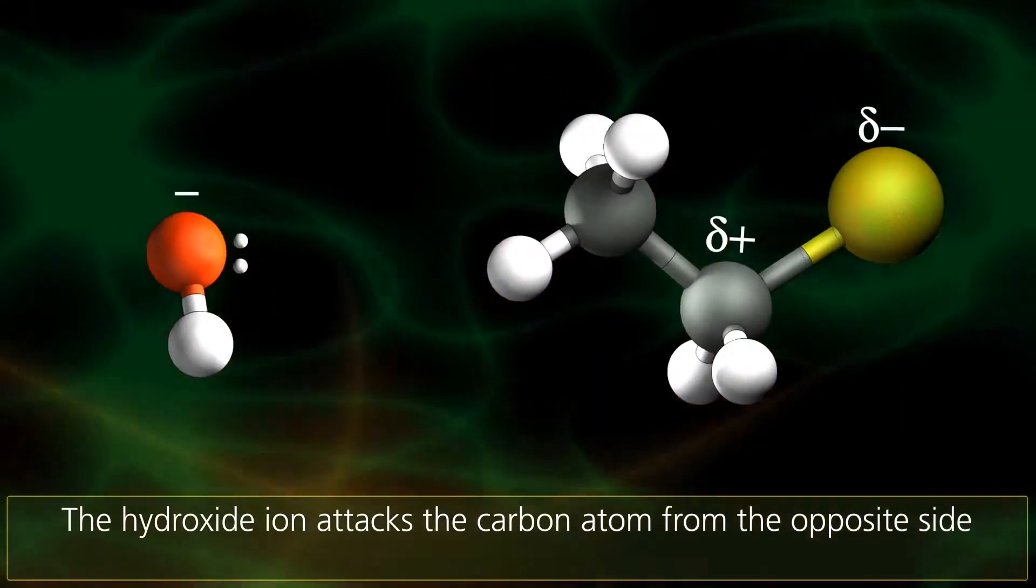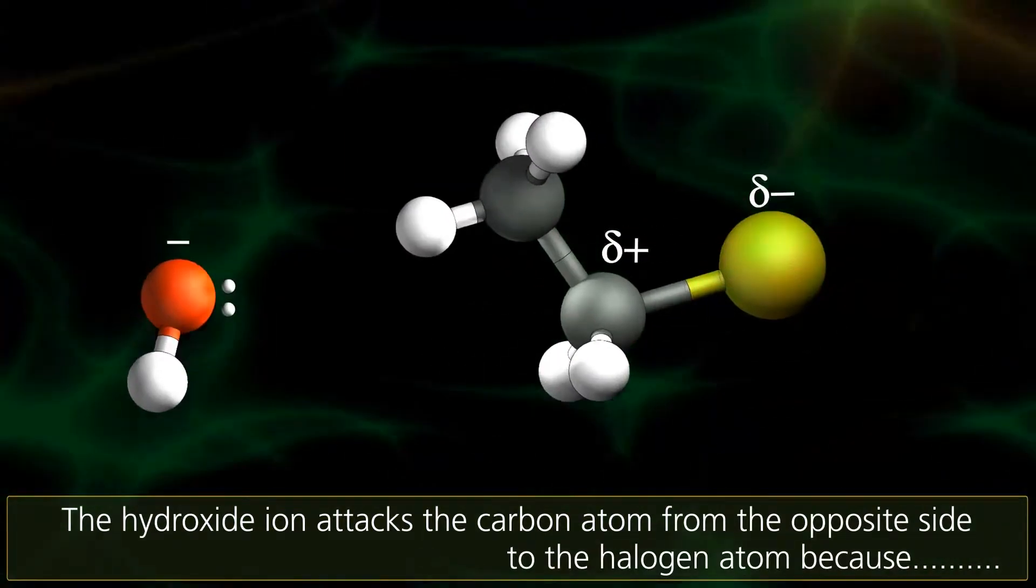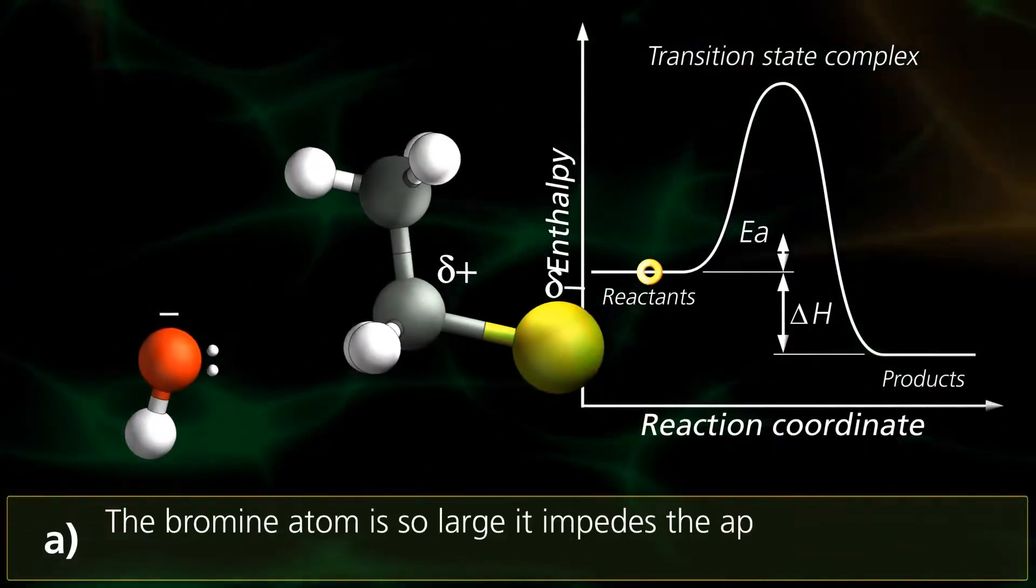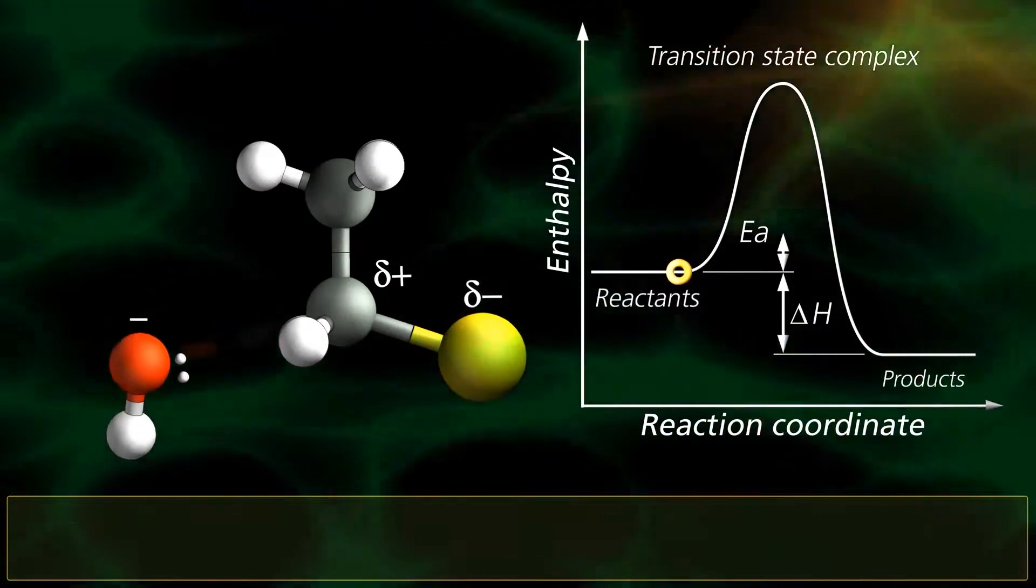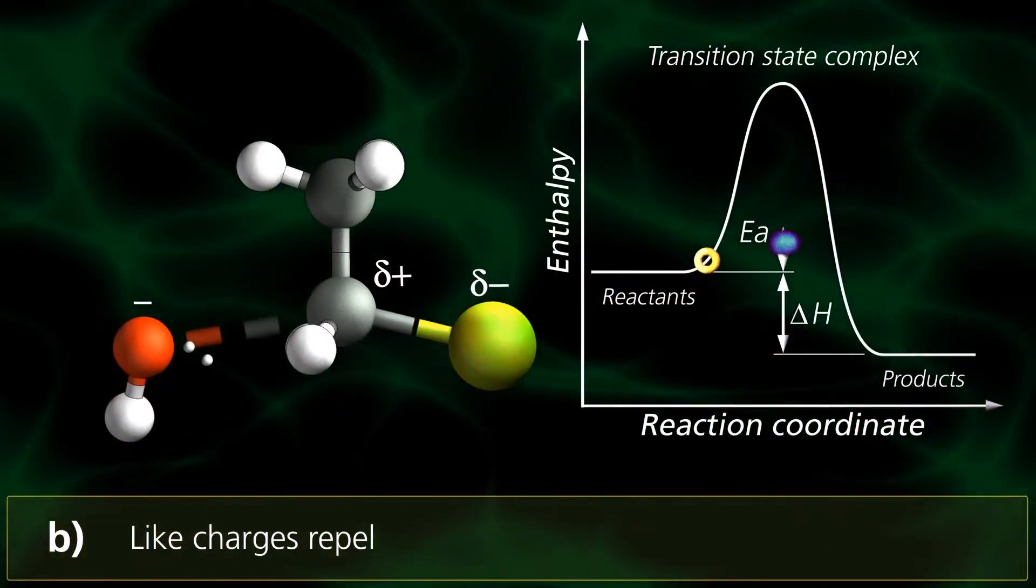The hydroxide ion attacks the carbon atom from the opposite side to the halogen atom, because the bromine atom is so large it impedes the approach of the smaller hydroxide ion, and it repels the negative charge nucleophile.